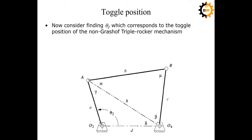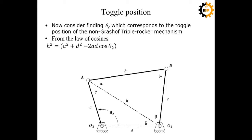In order to calculate the toggle positions, we have added a diagonal line h to the quadrilateral o2-a-b-o4. The procedure is to form two triangles, apply the law of cosines to find the value of h for both triangles, then equate the two expressions for h and solve for theta2 for a given value of mu, the minimum transmission angle.